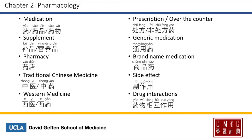Prescription will be 处方, and over-the-counter will be 非处方药. So prescription medication is 处方药. Generic medication, 通用药, and brand name medication 商品药 — 商品 meaning a commercial product. Side effect will be 副作用, and drug interactions, 药物相互作用.